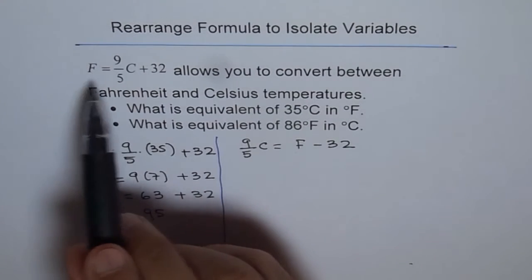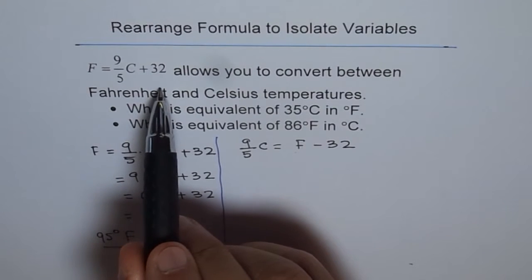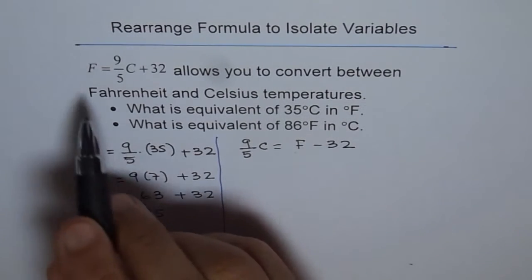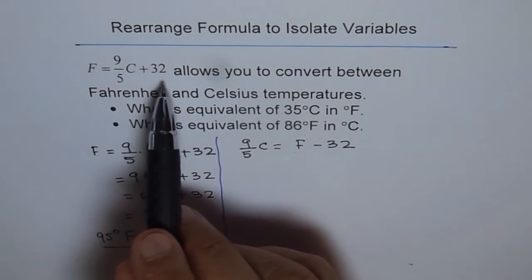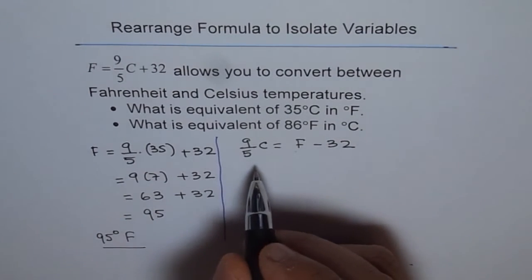We do it by taking away 32 from both the sides, plus 32 minus 32 is 0. So you get 9 by 5C. And on the right, I have changed the sides. It is equality. You can put them on either side.